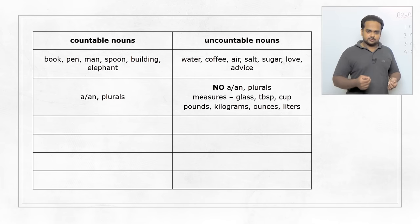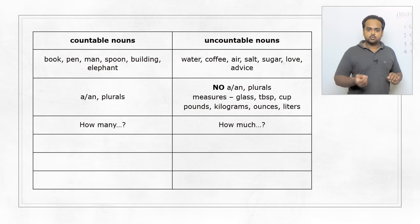To ask questions, we use the expression how many with countable nouns, like how many computers do you have in your office? And with uncountable nouns, we use how much. How much water is there in the bottle? Or how much sugar is there in the jar?